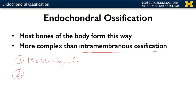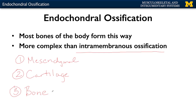What makes endochondral ossification unique is that you're going to have a cartilage model, and that cartilage model not only is present but actually grows — in terms of both length and width. Then lastly you're going to have the formation of bone. So three steps instead of the two steps with intramembranous ossification. Even though it's the more complex of the two, most of the bones of your body are going to form this way.